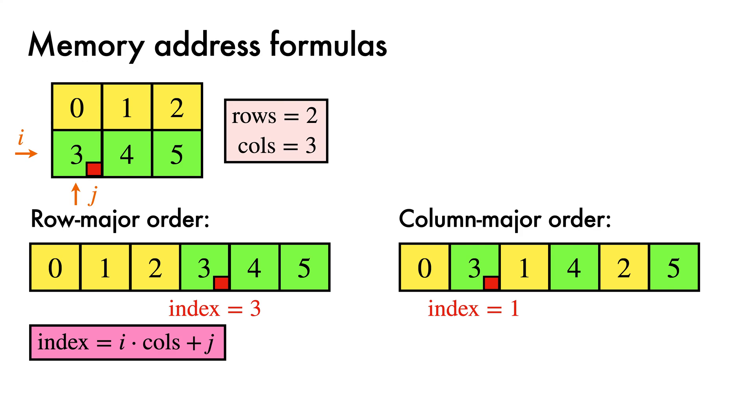For our example matrix element containing the value 3, we have i equals 1, j equals 0, so the index is 1 times 3 plus 0, which is 3.